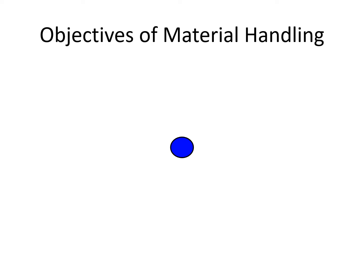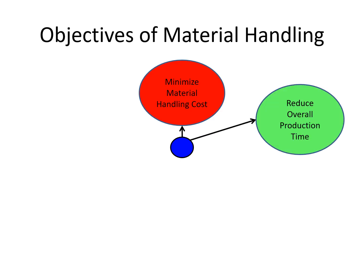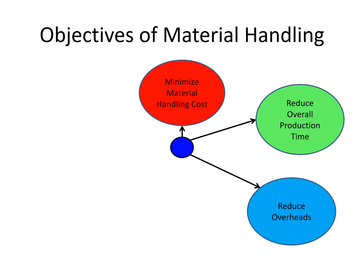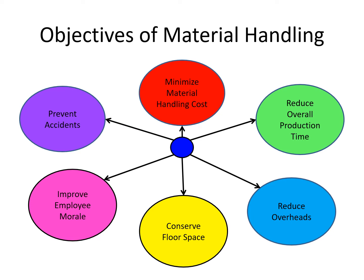First and foremost, the objective of material handling is to minimize the material handling cost, to reduce the overall production time, to reduce overheads, to conserve floor space, to improve the employee morale, and finally to prevent accidents.